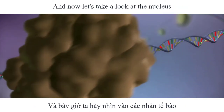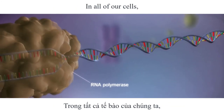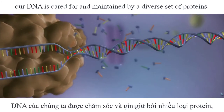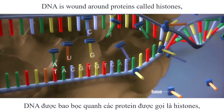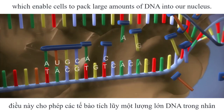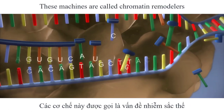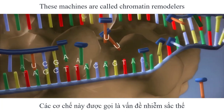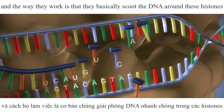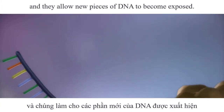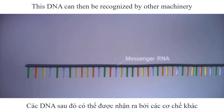And now let's take a look at the nucleus, which houses our genome in the form of DNA. In all of our cells, our DNA is cared for and maintained by a diverse set of proteins. DNA is wound around proteins called histones, which enable cells to pack large amounts of DNA into our nucleus. These machines are called chromatin remodelers, and the way they work is that they basically scoot the DNA around these histones, and they allow new pieces of DNA to become exposed.